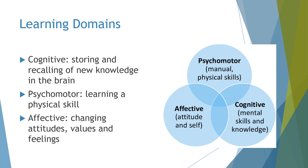There are three learning domains we need to be aware of. The first is cognitive — storing and recalling new knowledge in the brain. Then we have psychomotor learning, which is when you learn a physical skill. And affective learning is when attitudes, values, and feelings change. Teaching a new diabetic involves all three domains: new information about disease and treatment, the psychomotor skill of drawing up and administering insulin, and affective changes around diet and preventing complications.